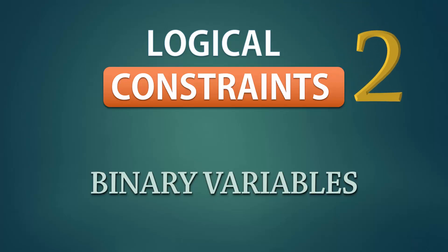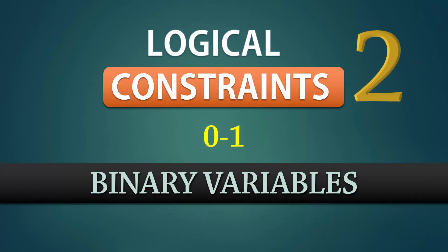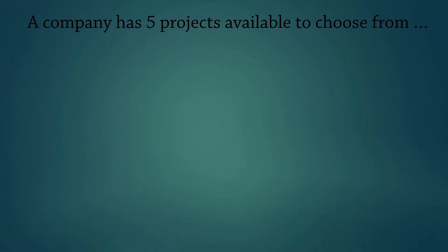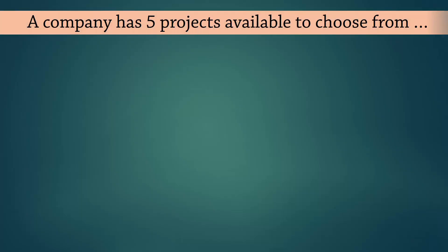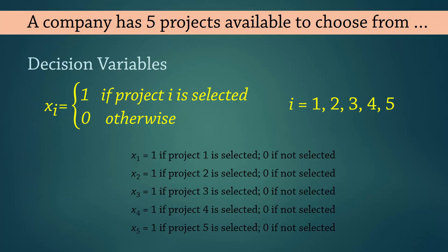Logical binary constraints, part 2. Suppose a company has 5 projects available to choose from. We define the decision variables as follows.